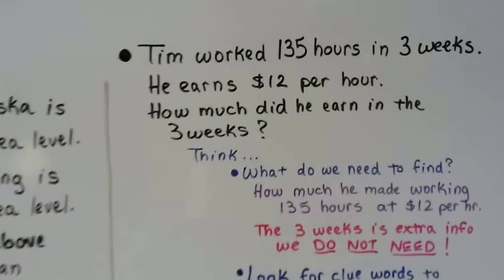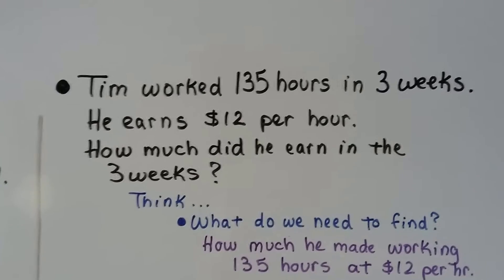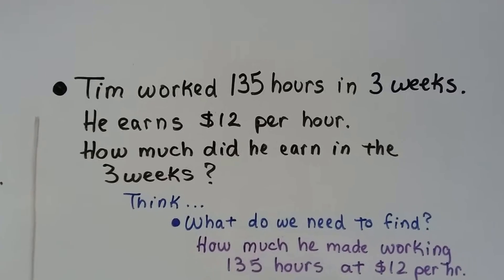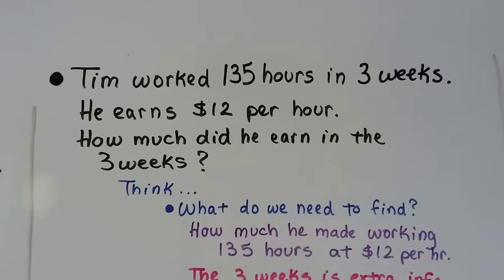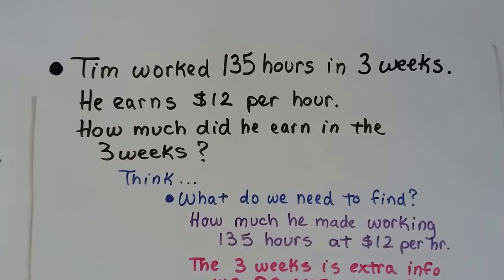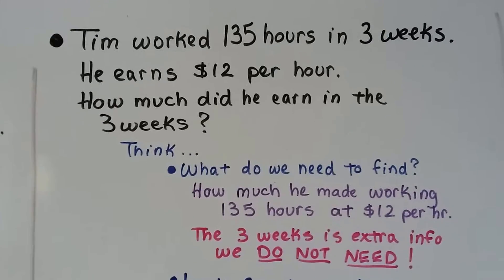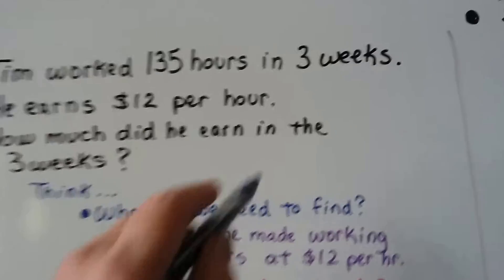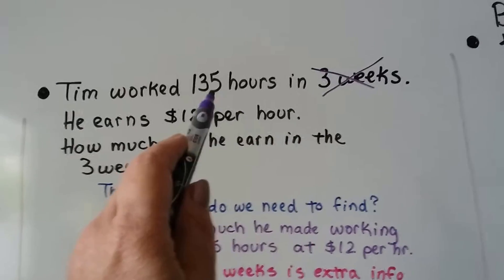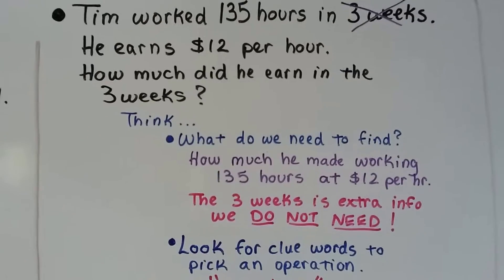Tim worked 135 hours in three weeks. He earns $12 per hour. So how much did he earn in the three weeks? What do we need to find? We need to figure out how much he made working 135 hours at $12 per hour. But the three weeks is extra info we don't need. That's a trick. We don't need that information. That's just how long it took him to make the 135 hours. So be careful when they give you too much information.